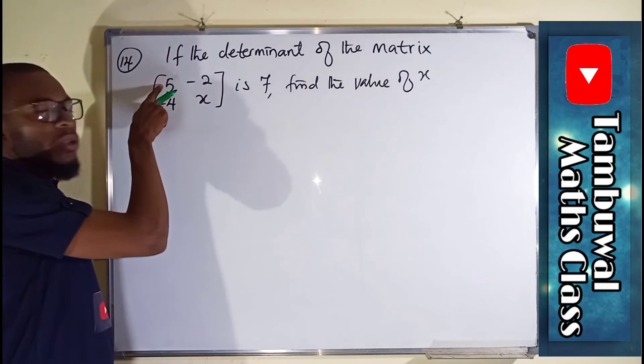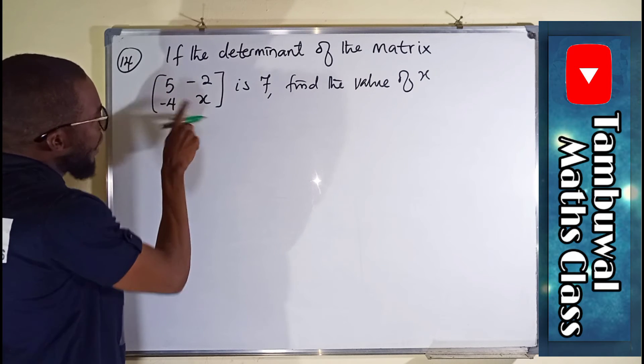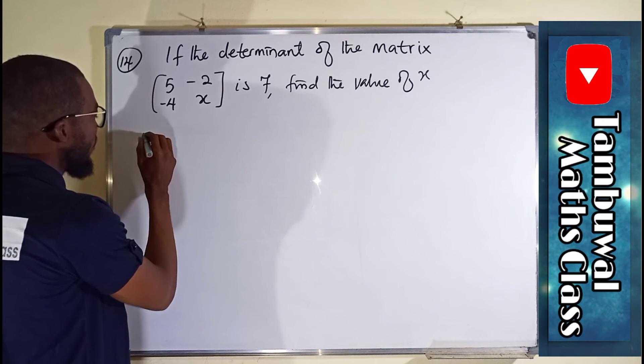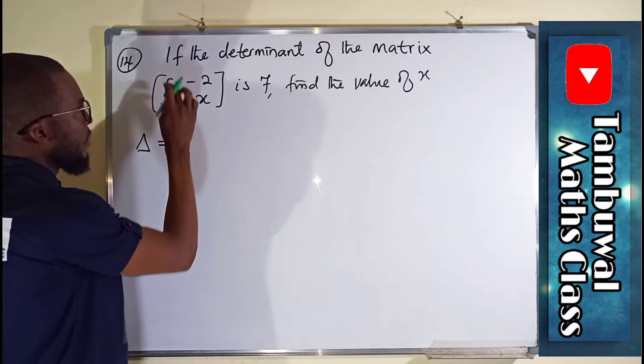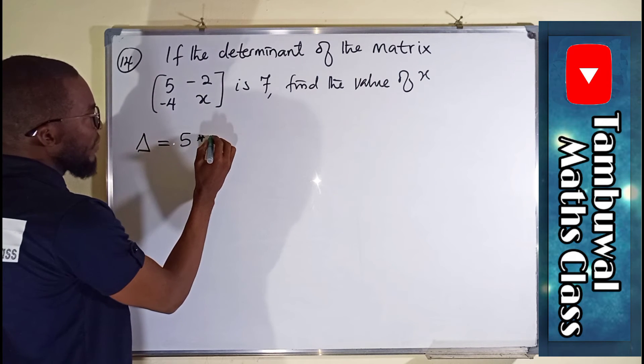And we have to start with row 1 column 1. So we say 5 times x. So the determinant, let me call it delta.